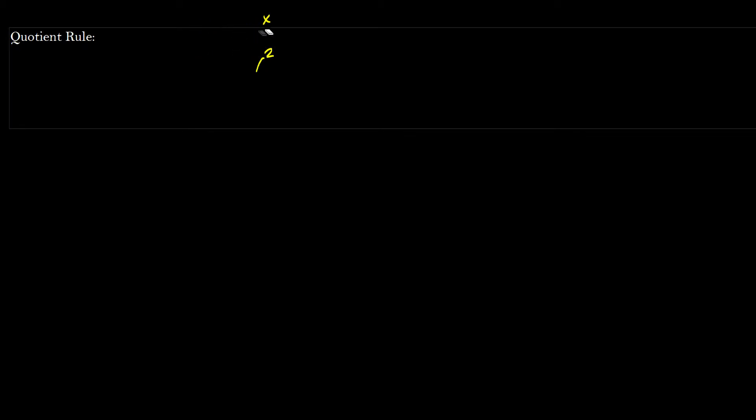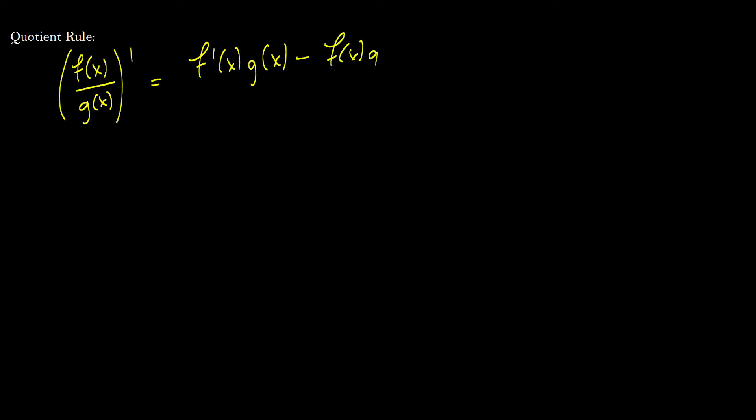So we'll jump right into the rule for that. Again, there's proofs online everywhere. I'm not going to go over the proof here. But if we have a function f of x divided by another function g of x, and we take the derivative, it is equal to the derivative of f times g minus f of x times the derivative of g of x, all divided by g of x squared.